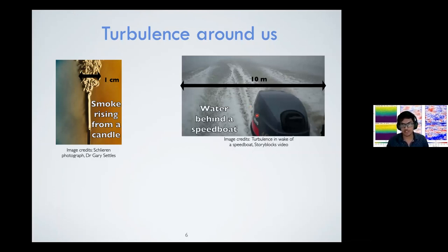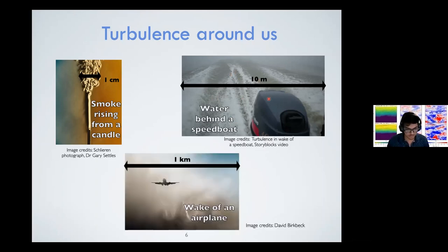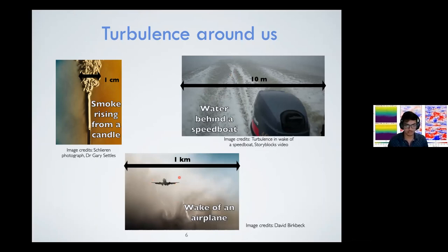We also see turbulence in the water behind a speedboat — that's turbulence in water, whereas the candle smoke was turbulence in air. This can be as big as 10 meters, probably the size of your backyard or your balcony if you live in an apartment. Many of you may have experienced turbulence when traveling in an airplane — the pilot generally announces that you have to put your seatbelts on and sit upright. The airplane passes through turbulent air, and these whirls can be as big as one kilometer in size.